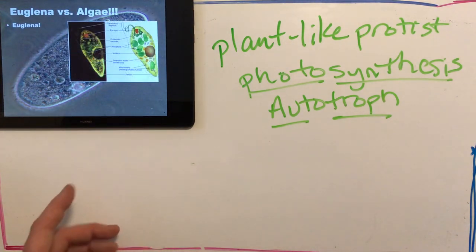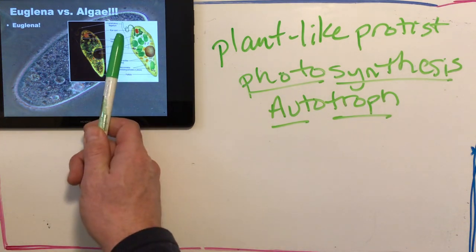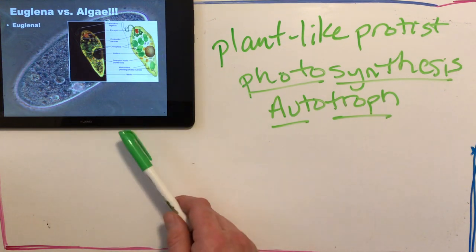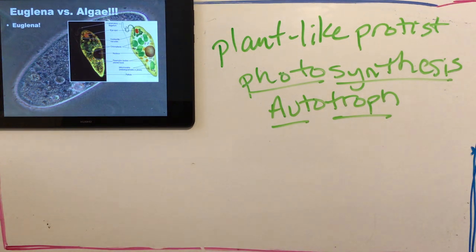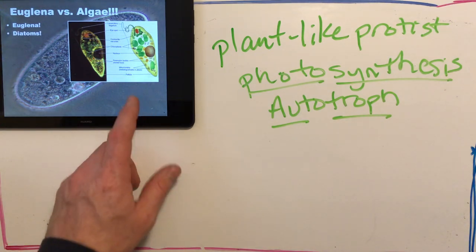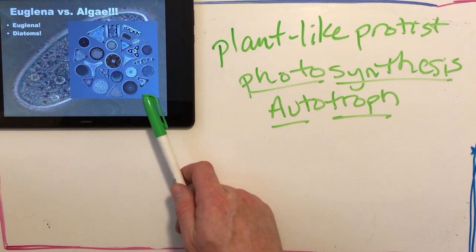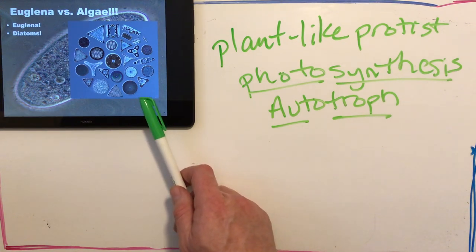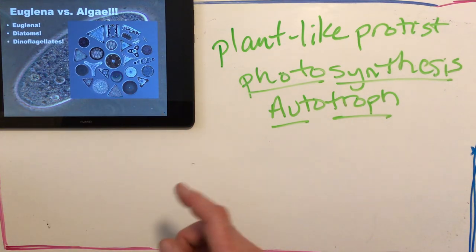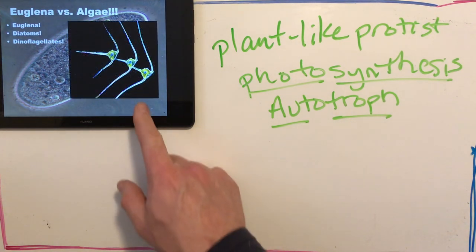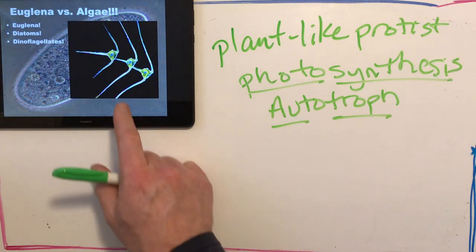Here's a euglena — a single-celled organism with a flagella coming out of the tail end, a nucleus, chloroplasts which contain chlorophyll and give it its photosynthetic ability, and a little red thing called an eye spot that allows it to sense light. It can't see with great detail like us — it's more like closing your eyes and being able to tell when the lights turn on or off. There are also diatoms, found in ocean water, and dinoflagellates which you can see have chlorophyll inside and flagella as well.